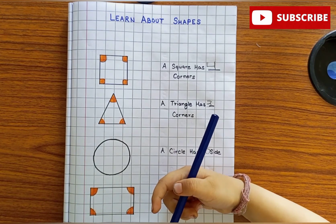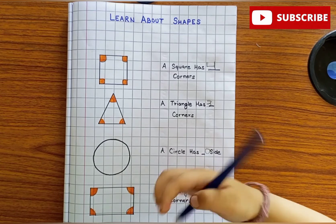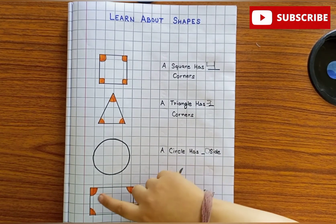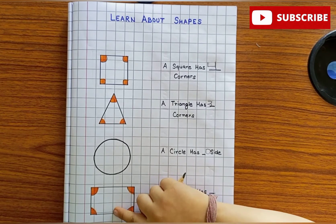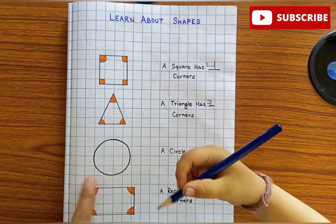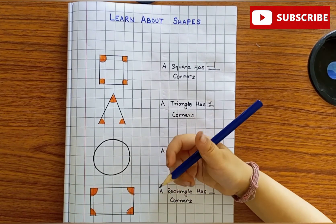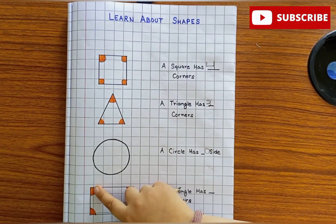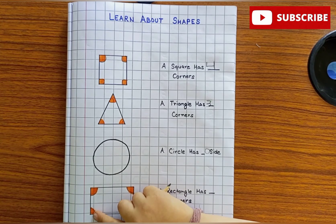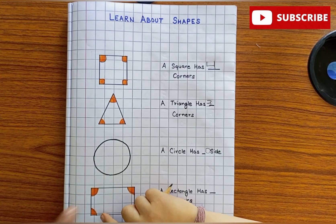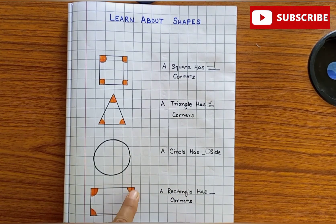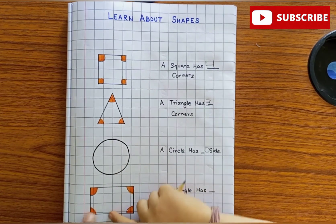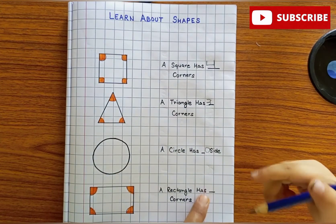Now tell me, how many sides are there in a rectangle? One side, two sides, three sides, four sides. Very good. Four sides in a rectangle. And how many corners? One corner, two corners, three corners, four corners. Very nice. Our rectangle has four sides and four corners. Write here number four.